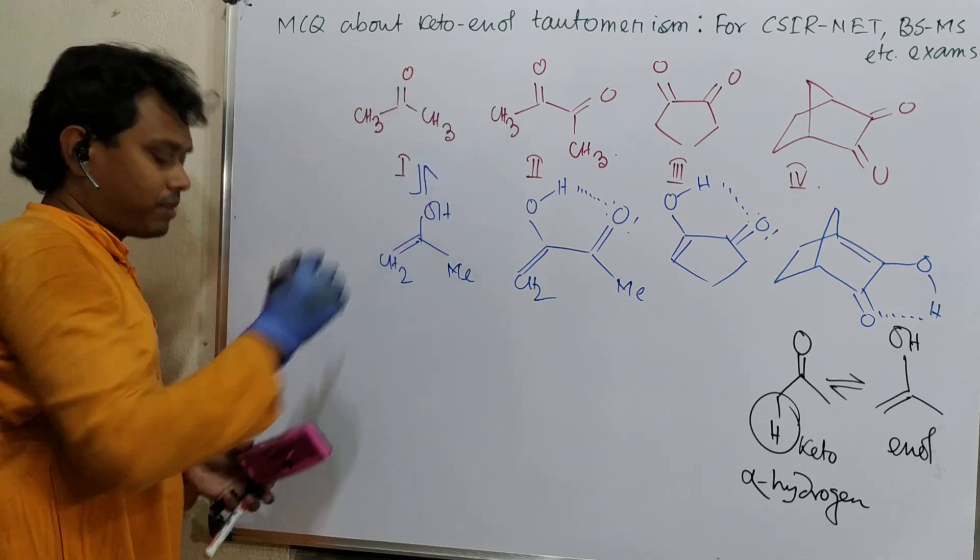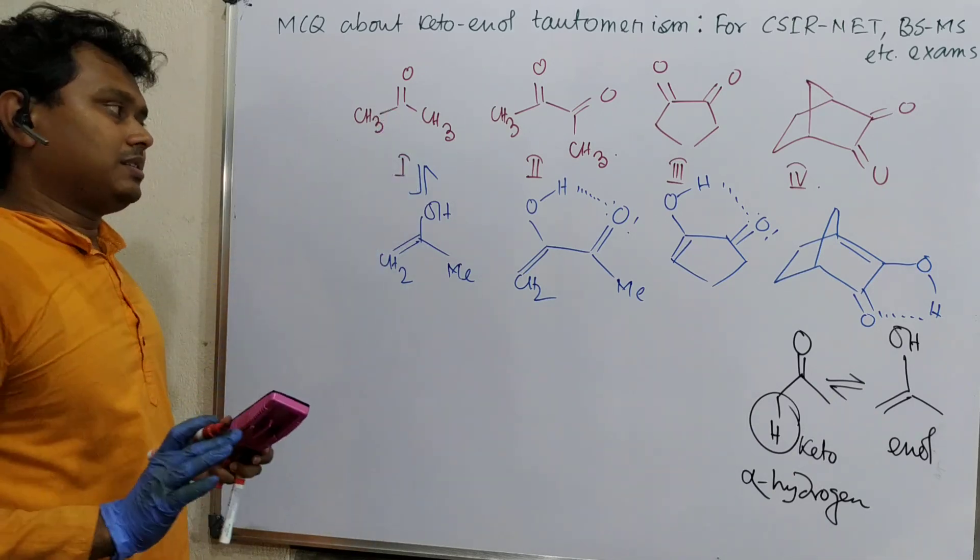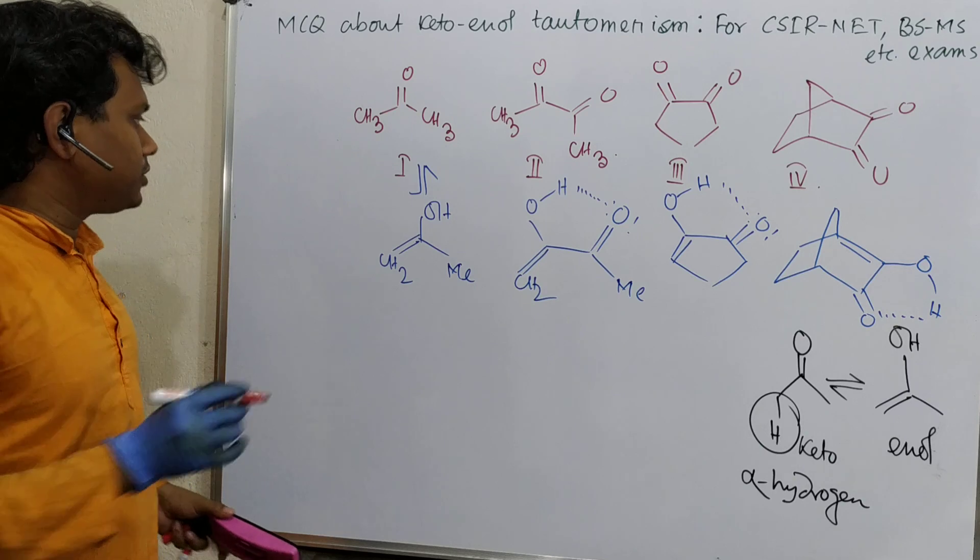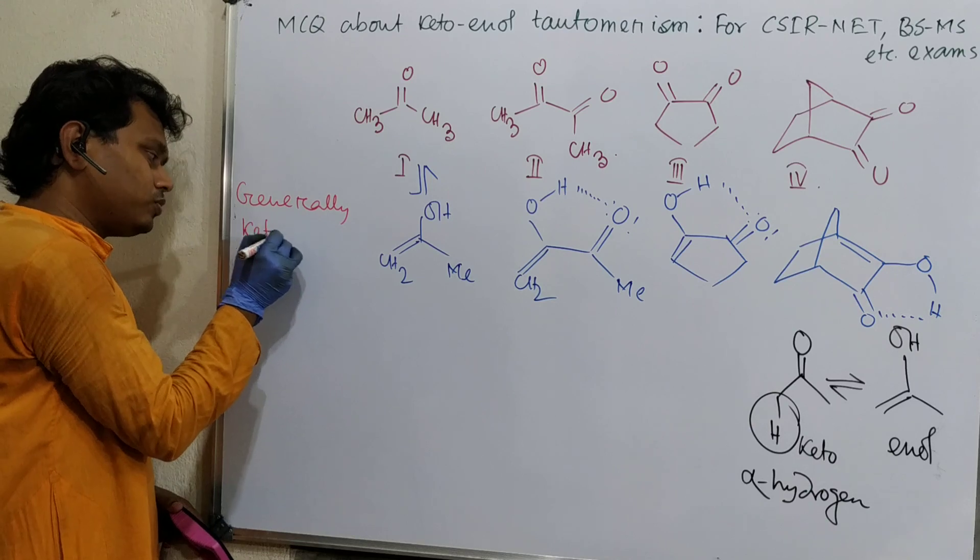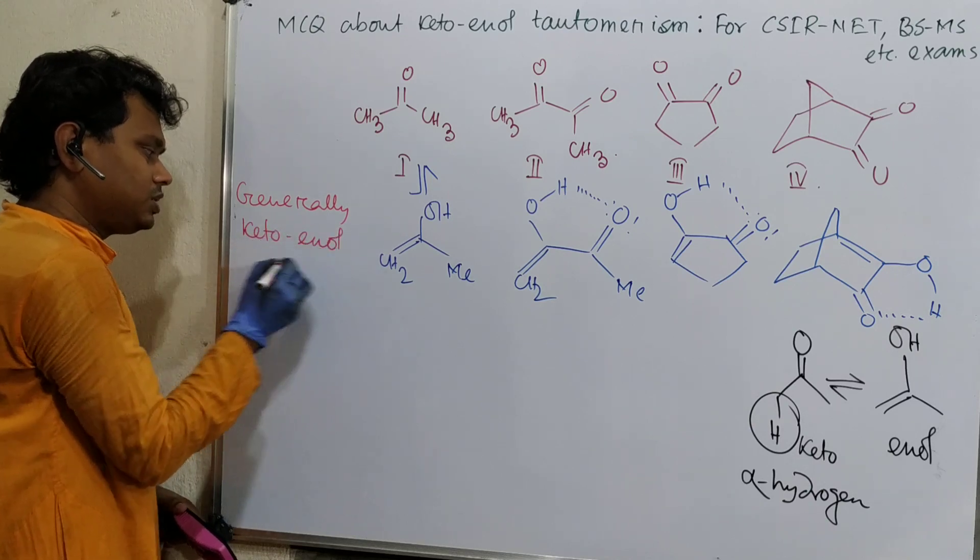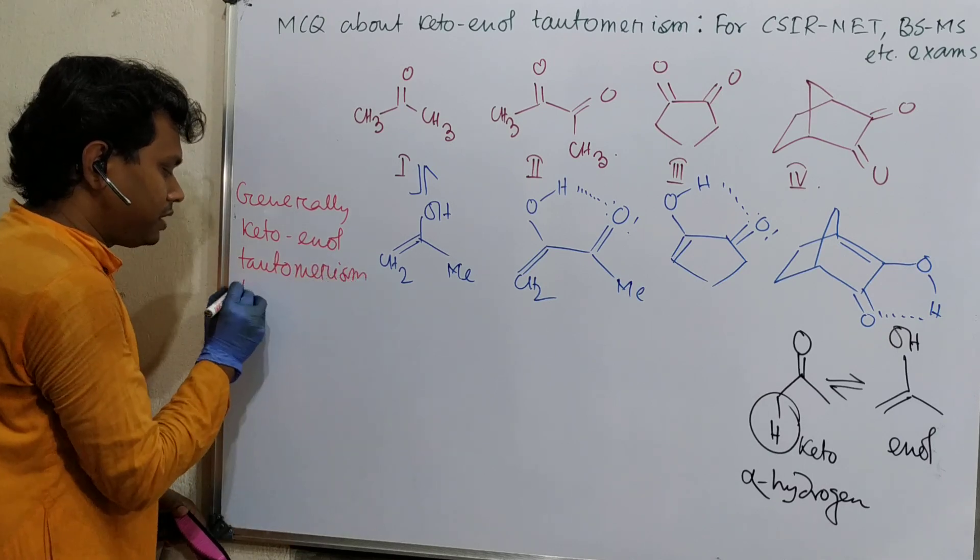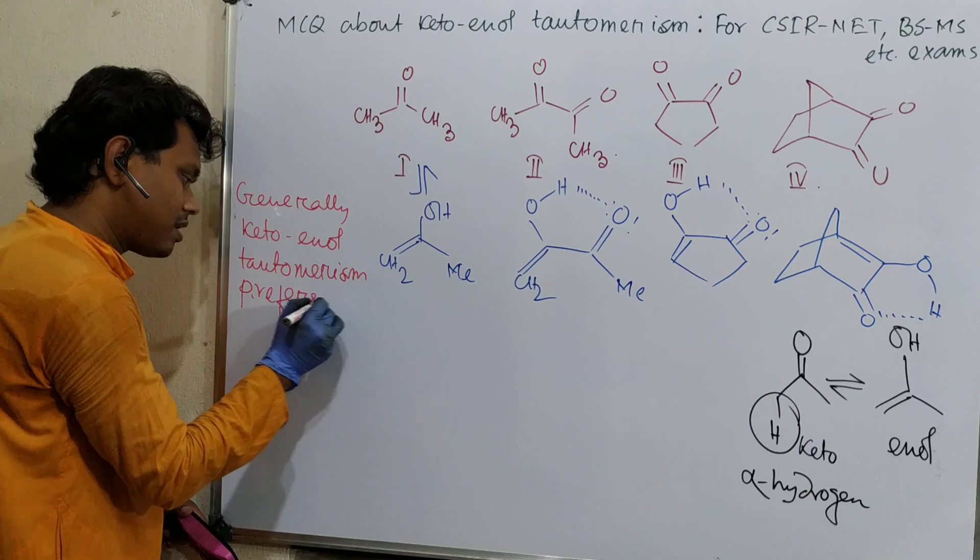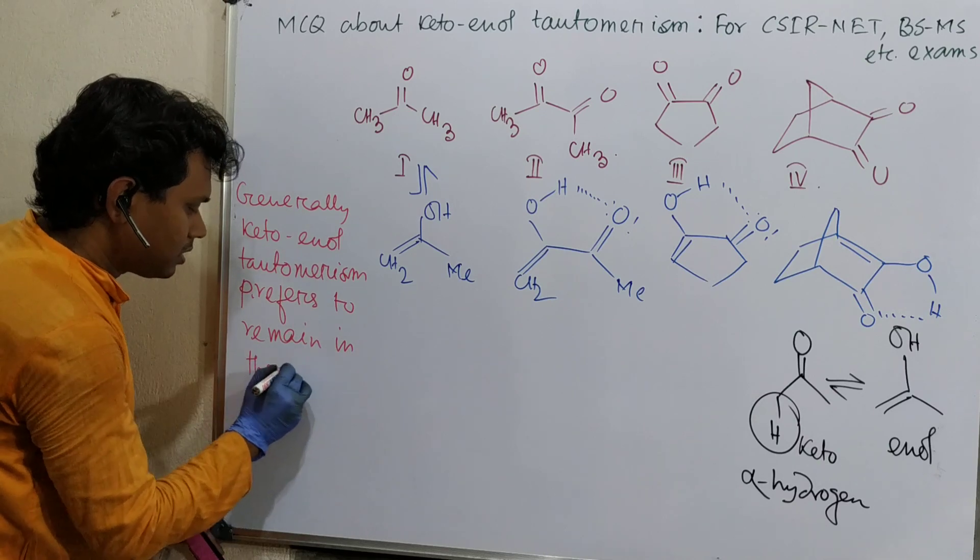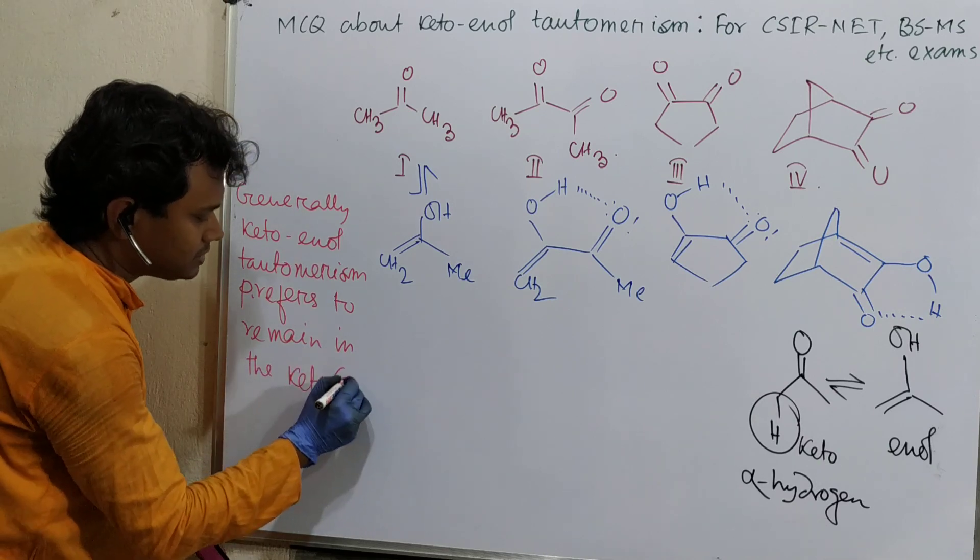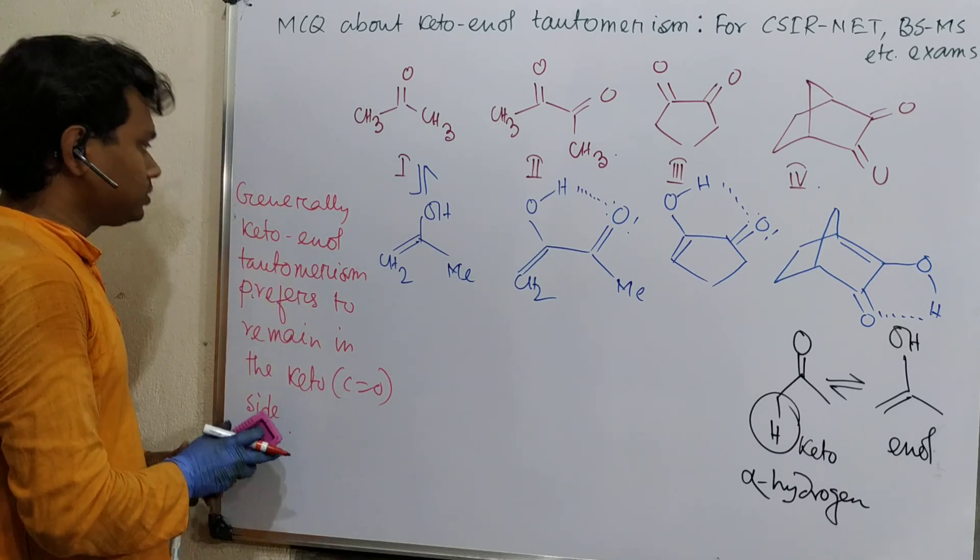One interesting point - the basic criteria for keto-enol tautomerism is that it must have an alpha hydrogen. All the compounds have alpha hydrogen. Still, their enol content will vary. This acetone is a reference compound. Generally, keto-enol tautomerism prefers to remain in the keto side, meaning C=O side. Keep this in mind.